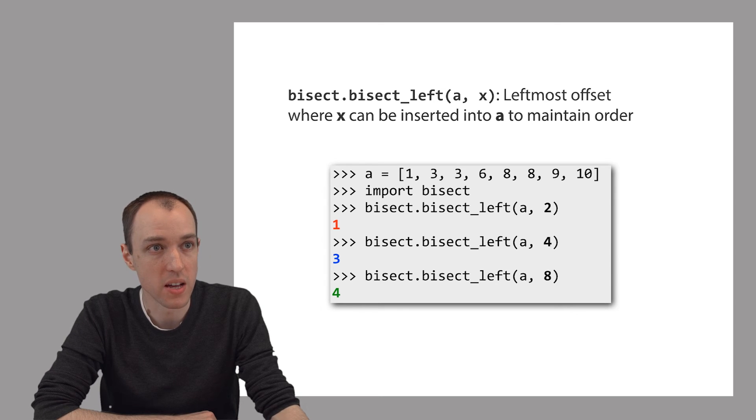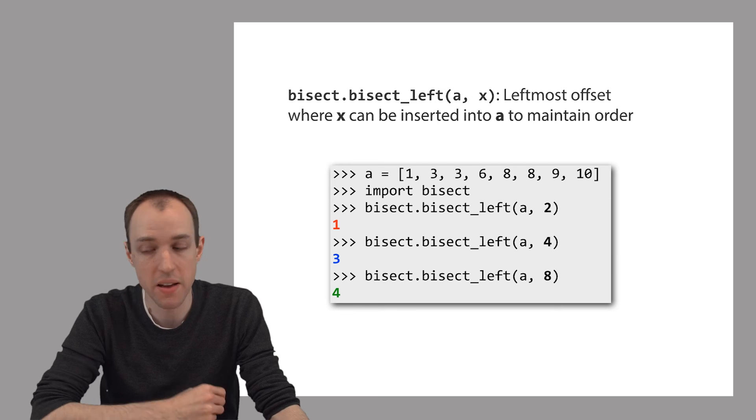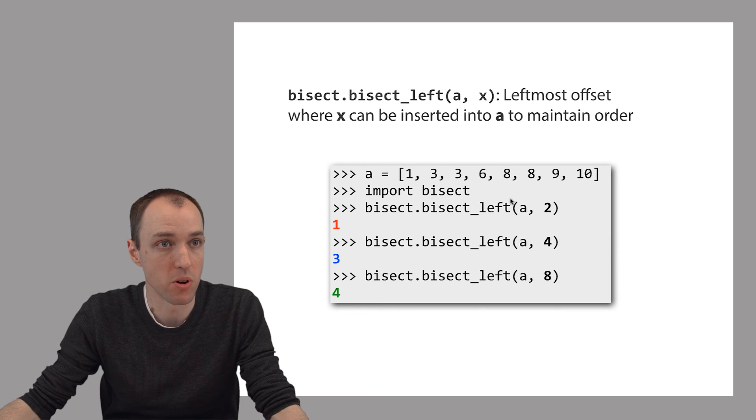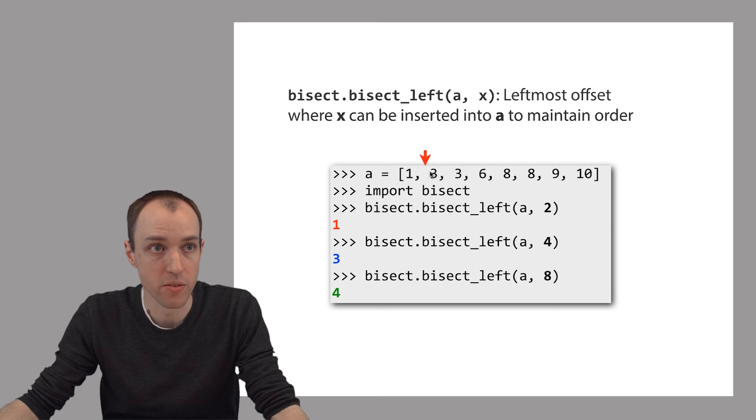In this example, we call bisect_left with the parameter a, which is this list up here, and the argument 2. Bisect_left returns the leftmost index where we can insert 2 into this list such that the list is still in order. And that's offset 1 right here. If we wanted to insert 2 into this list and have it still be in order, we would put it right here between this 1 and the first 3, and shift all these entries over by 1.